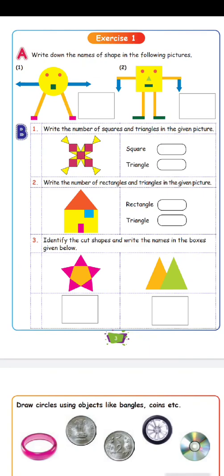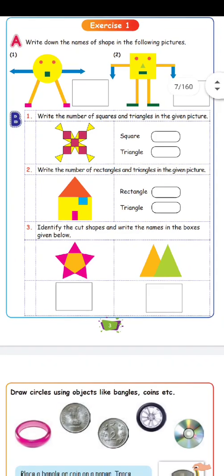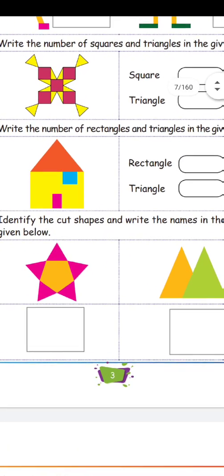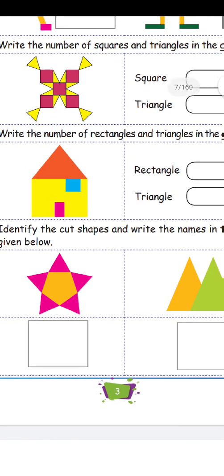If you want to identify the shape in the middle — a square and a triangle — write the number of squares and triangles in the given picture. The corner of the first shape has 4 triangles. We have 5 squares and 4 triangles.